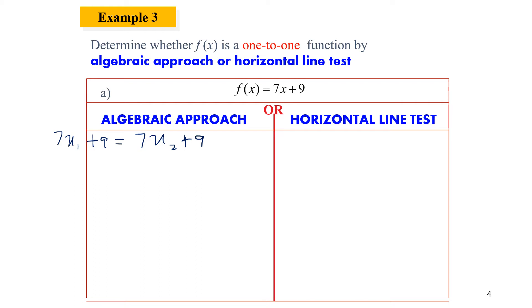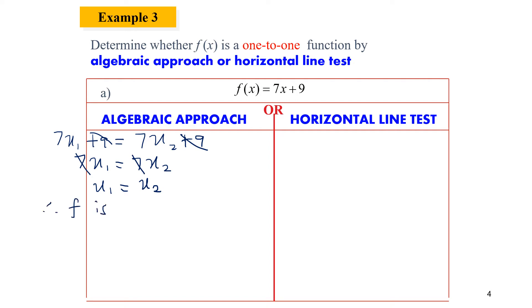The first step after substituting x with x₁ and x₂ is to cancel out the constant 9 on both sides of the equation. We then obtain 7x₁ equals 7x₂. We then cancel out the coefficient, leaving only x₁ equals x₂. In this case, if we can prove that x₁ equals x₂ only, then we can conclude that f is one-to-one.